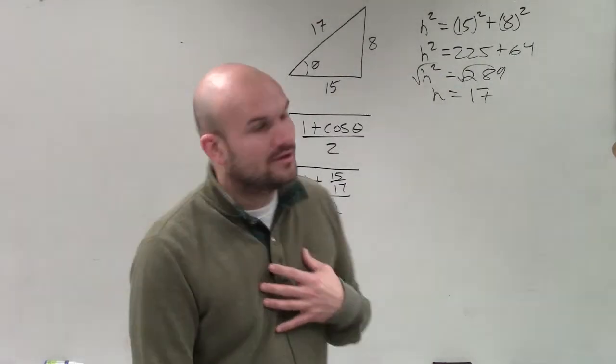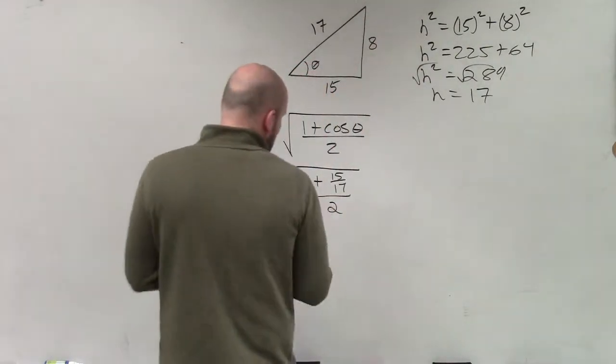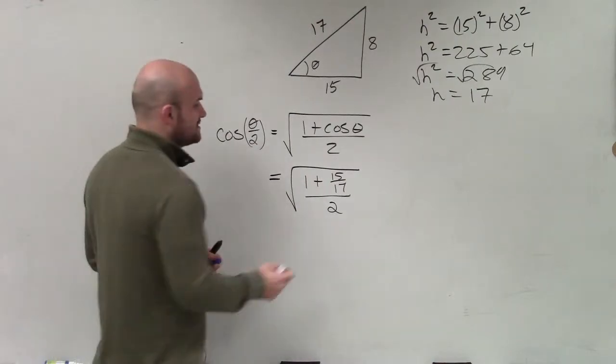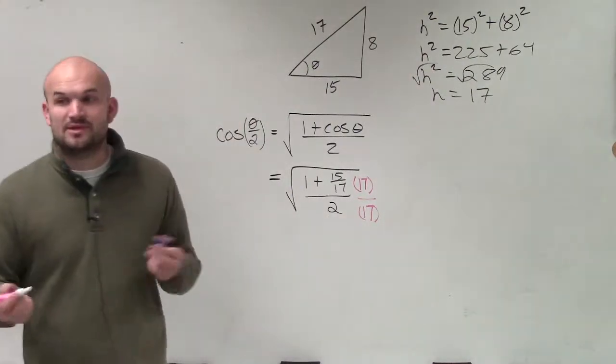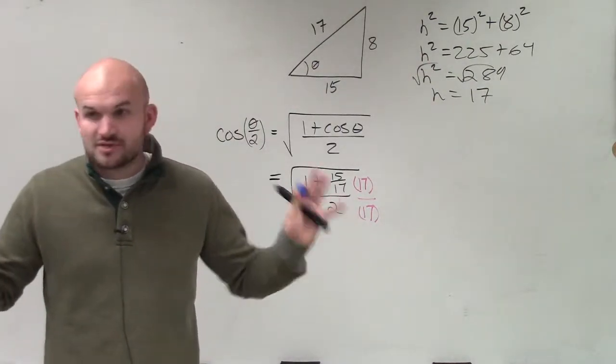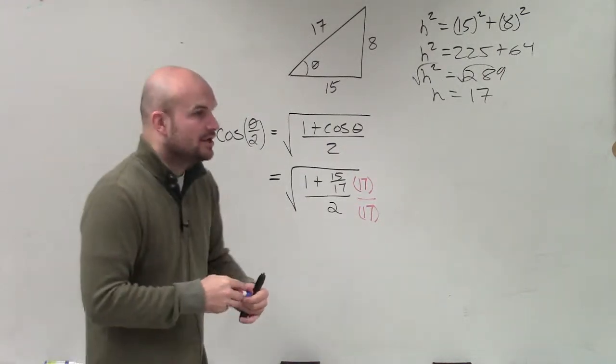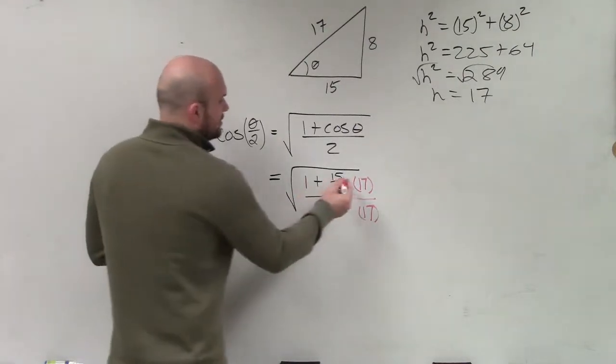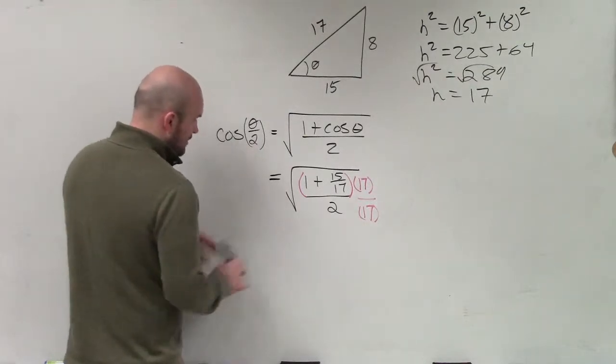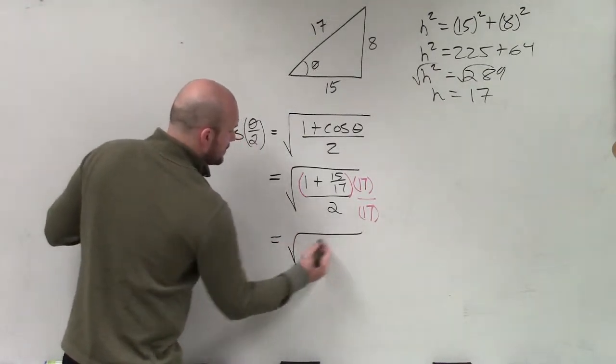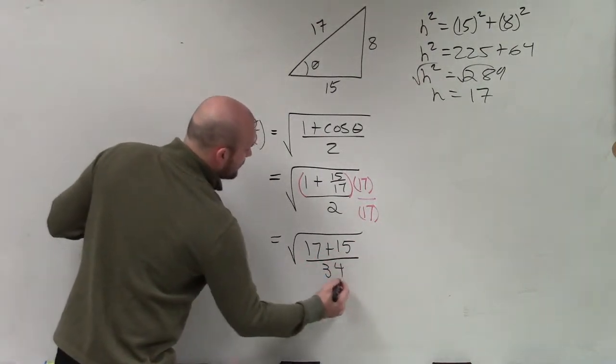So I have the square root of 1 plus 15 over 17 divided by 2. Now in my case, I don't want to deal with fractions. So what I'm going to do is, since I have 17 in the denominator here, I'm going to multiply 17 over 17. And it's OK. As long as I multiply on the top and the bottom, I'm not changing it. I'm just creating an equivalent fraction. So when I do that by applying distributive property up top, I now have the square root of 17 plus 15 over 34.